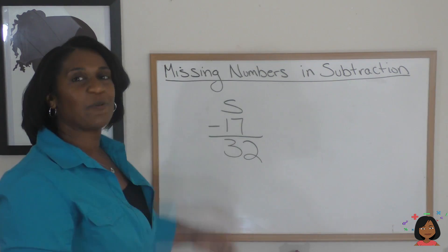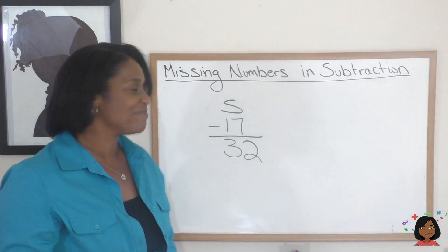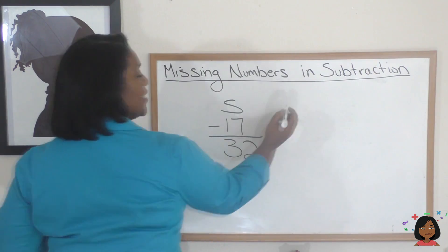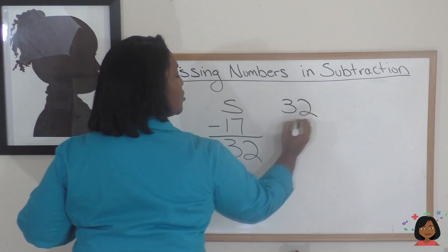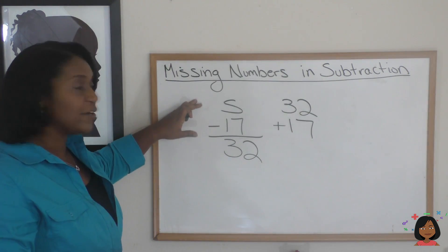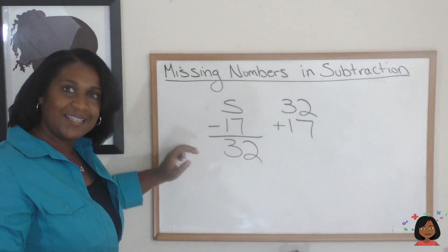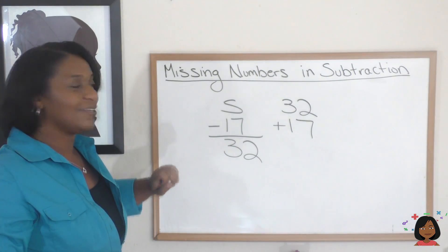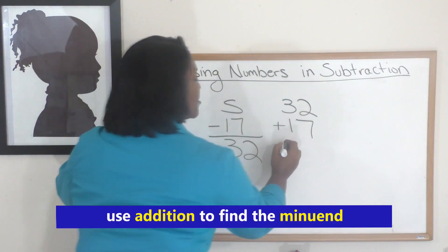Well, that looks like how we do our built-in answer checker, doesn't it? So, let's go ahead and add these two. 32 plus 17, because we know that this s has got to be a bigger number than both 17 and 32. So, let's add them together.